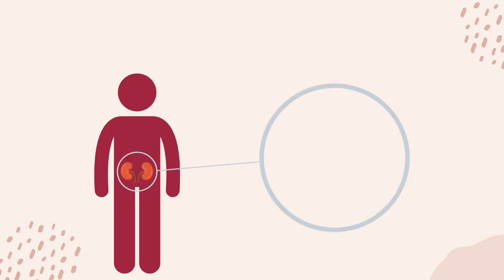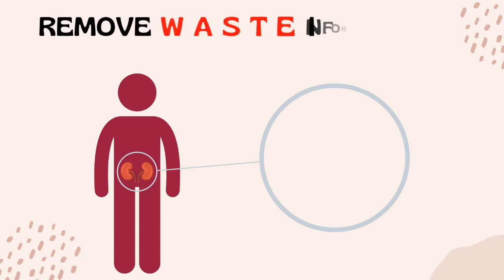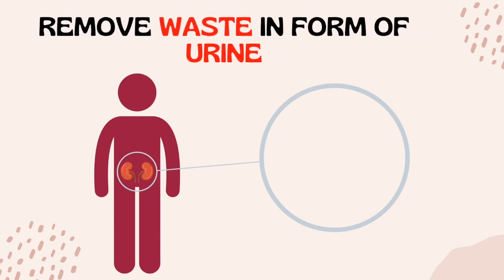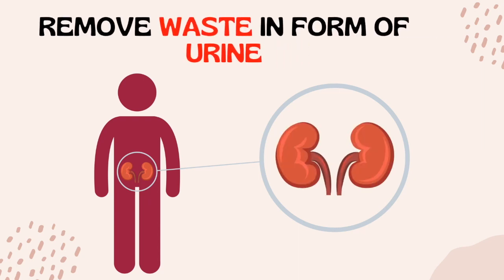Most of us have two kidneys, which are at the back of either side of our spine. Kidneys are bean-shaped organs and are responsible for removing waste from a person's blood in the form of urine, and also maintain a healthy balance of water, salts, and minerals such as sodium, calcium, phosphorus, and potassium in your blood.